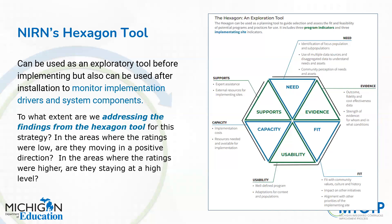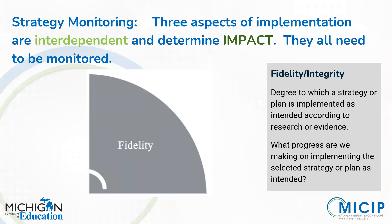We already talked about the Hexagon Tool being used both as a planning tool and as a monitoring tool. The capacity component is built right into the Hexagon Tool, though the same is true for the other components. The Hexagon Tool really asks us: as we're considering something as part of our plan, is it the right thing and can we do it the right way?